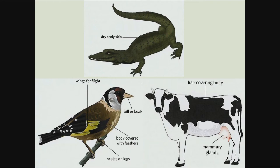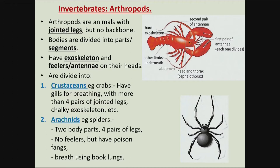Now, how about the invertebrates? These are animals without backbones. We have so many groups of invertebrates, but according to your syllabus, we will only be talking about arthropods. We won't consider other groups like mollusks, echinoderms, and worms — we will only look at the characteristic features of the arthropod groups.